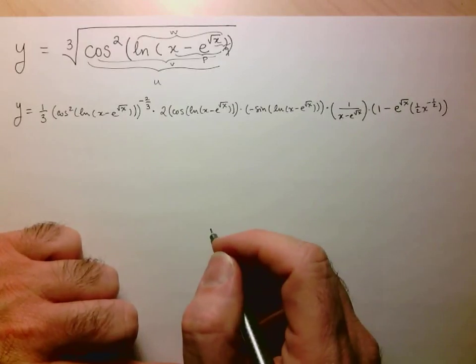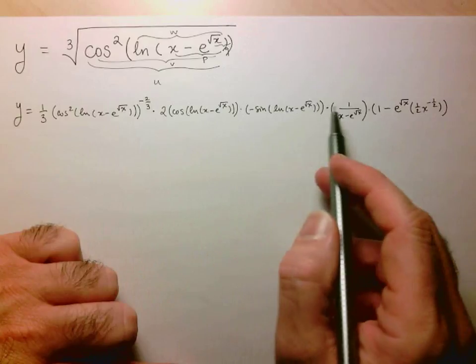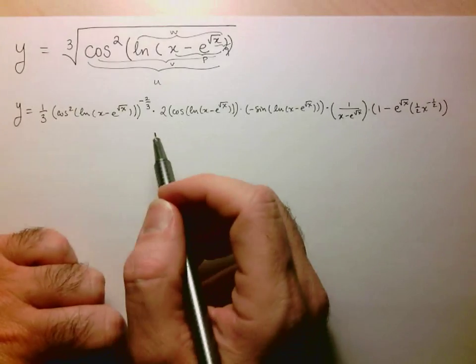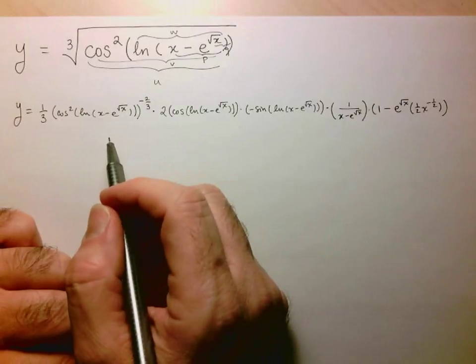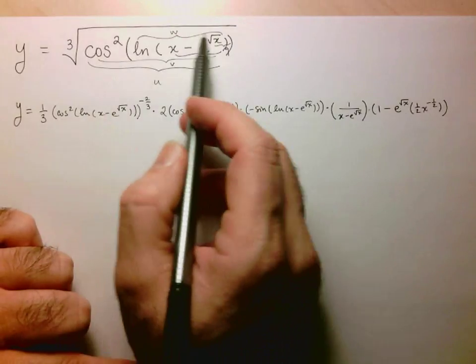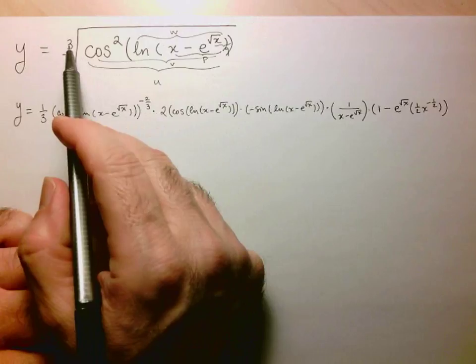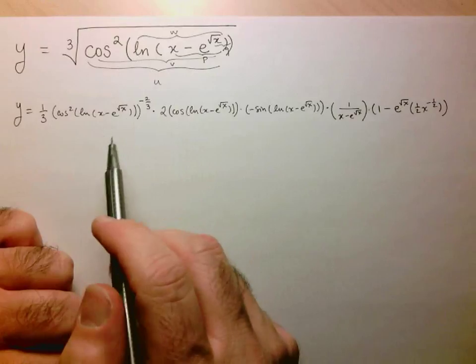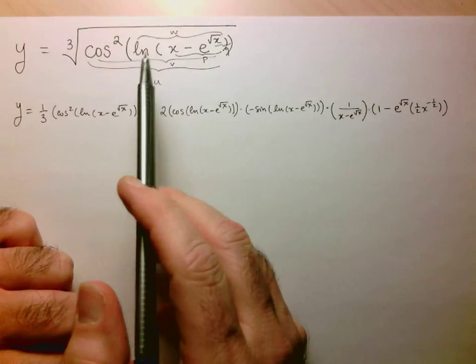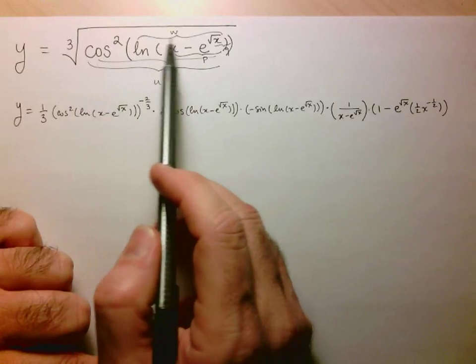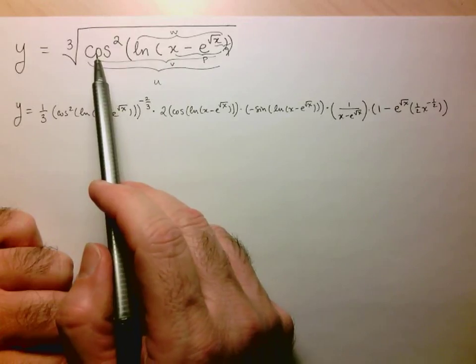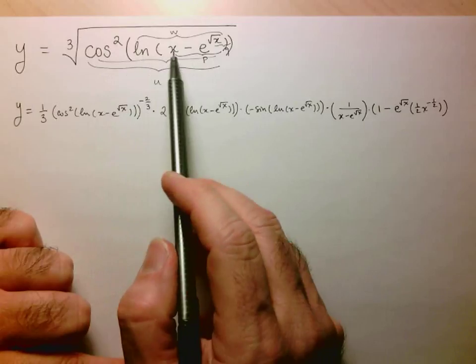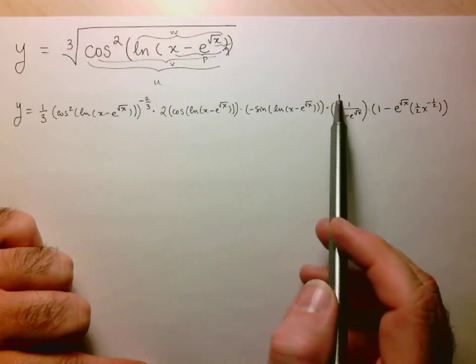We had to use the chain rule 1, 2, 3, 4, 5 times. But the idea here was to think of this in chunks. First it was just some expression to the 1/3. The next one was some expression squared, take the derivative of that. Then it was cosine of some expression, so the derivative was minus sine.